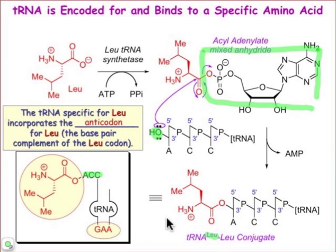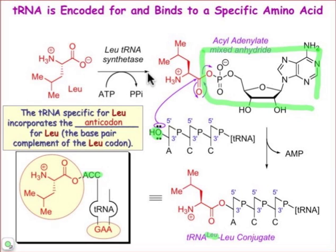Misacylation, which would result in infidelity of protein sequence to DNA sequence, would result, for example, if we put valine onto the transfer RNA that codes for leucine. This is the process that the synthetase must sort out and make sure that it binds both the correct amino acid — leucine — and the leucine transfer RNA.